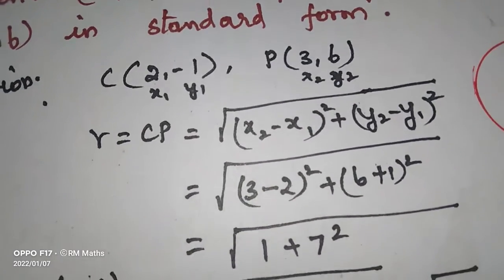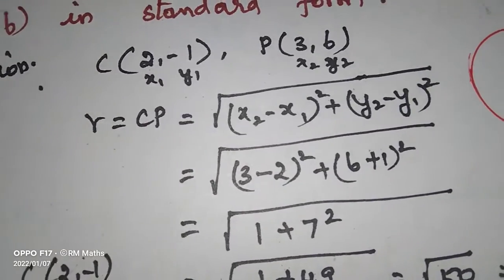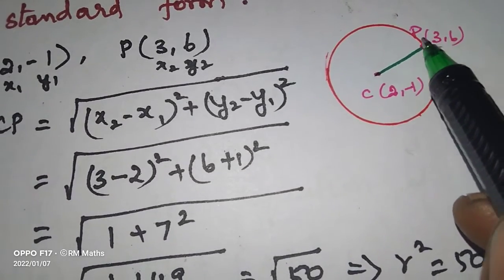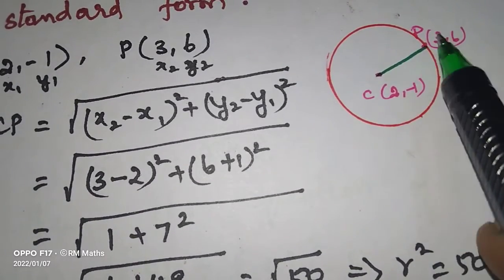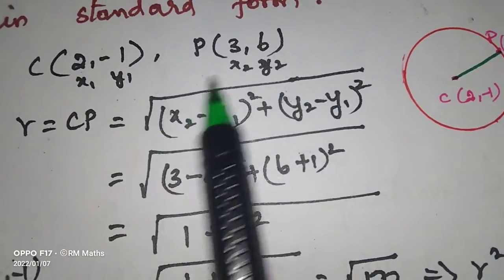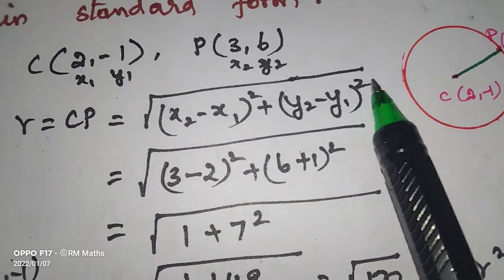The distance is r. This is r. This is center C, the perimeter is P. The radius is r, which is CP. The formula is square root of x2 minus x1 whole square plus y2 minus y1 whole square.